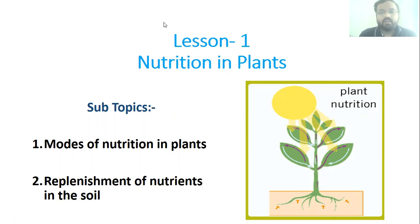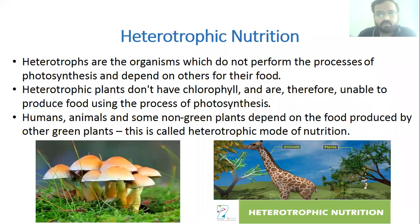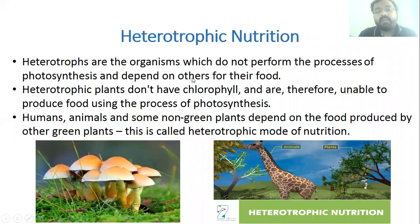So what is heterotrophic nutrition? We have seen that organisms which can prepare their own food are autotrophs, and this mode of nutrition is called autotrophic nutrition. Opposite to that is heterotrophic — organisms which cannot prepare their own food are called heterotrophs. This mode of nutrition is called heterotrophic nutrition. Heterotrophs do not perform photosynthesis and depend on others for their food.